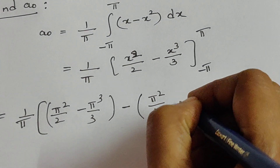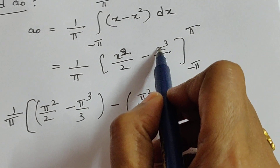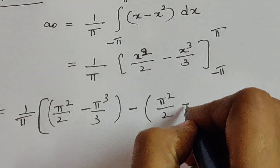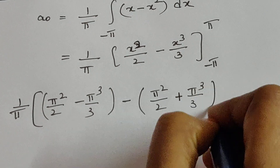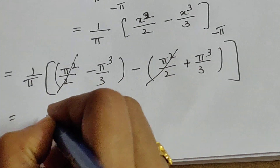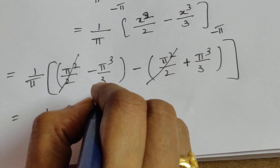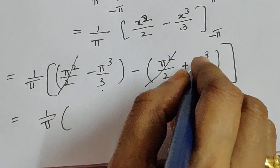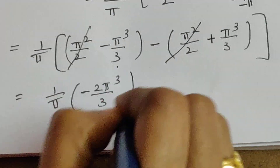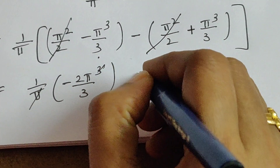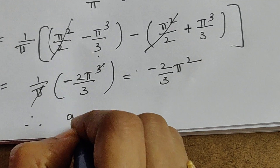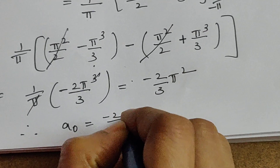In place of x minus pi, that means minus pi cube by 3. So pi square by 2 minus pi square by 2 cancels. We get 1 by pi times minus pi cube by 3 minus pi cube by 3, which is minus 2 pi cube by 3. Pi cancels, giving minus 2 by 3 pi square. Therefore, a naught equal to minus 2 by 3 pi square.